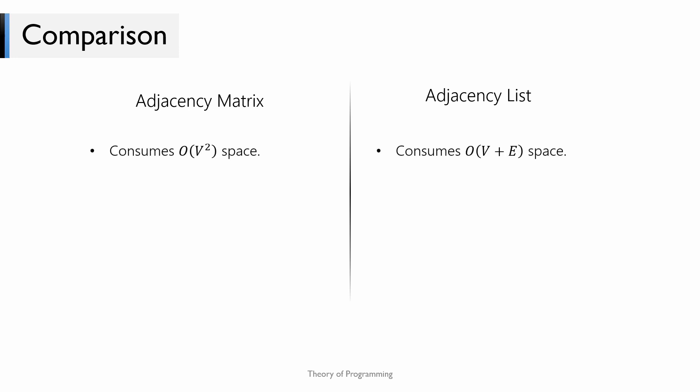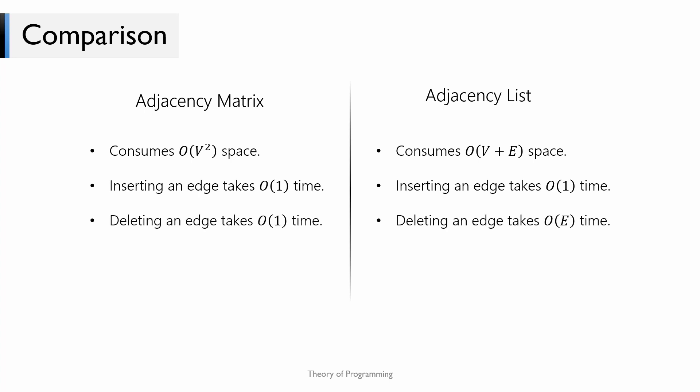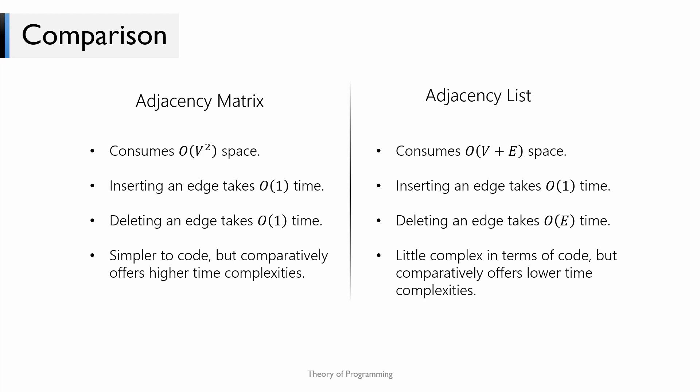Now let us compare the two graph representations. Adjacency list is more space-efficient than adjacency matrix because its space complexity is O(V + E), which is better than O(V²). Inserting an edge into both takes constant time: in the adjacency matrix you have direct access to a cell and just set it to 1; in the adjacency list you use head insertion of a linked list. However, deleting an edge is faster in the adjacency matrix, which takes constant time, whereas in the adjacency list you have to traverse the whole linked list to find the node, making edge deletion O(E). An adjacency matrix is simpler to code, but using an adjacency list for standard graph algorithms offers better time complexities. I personally prefer using an adjacency list, but an adjacency matrix is a quick and easy option.